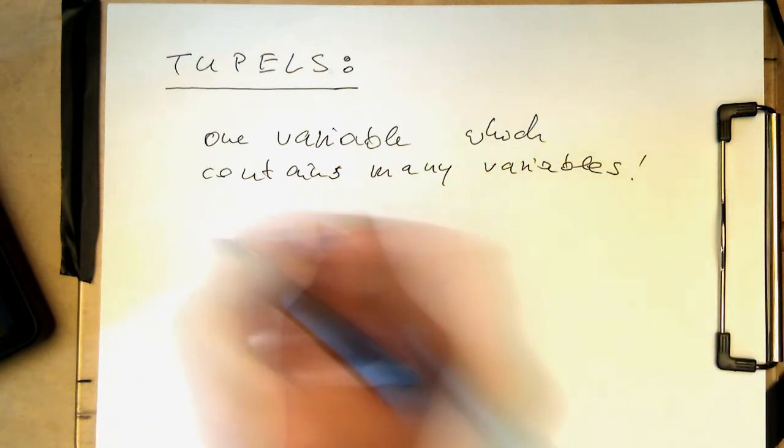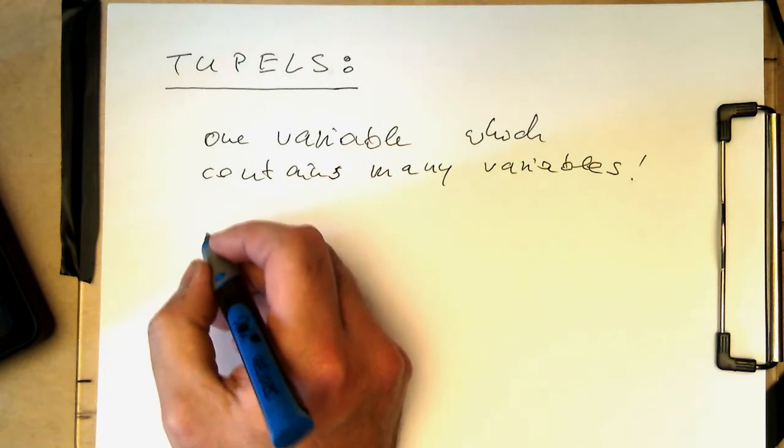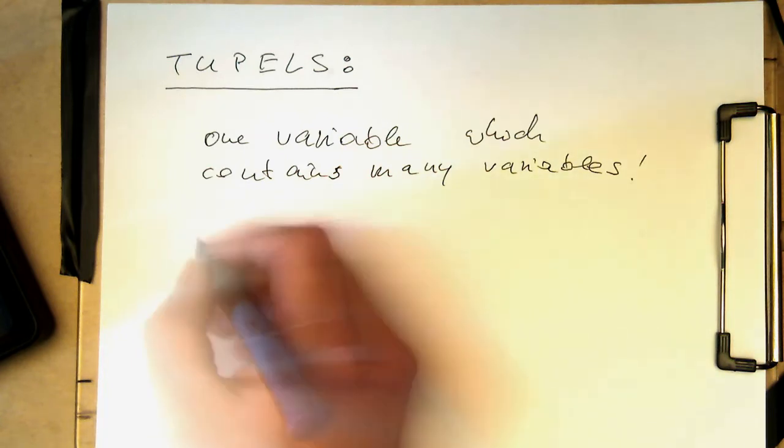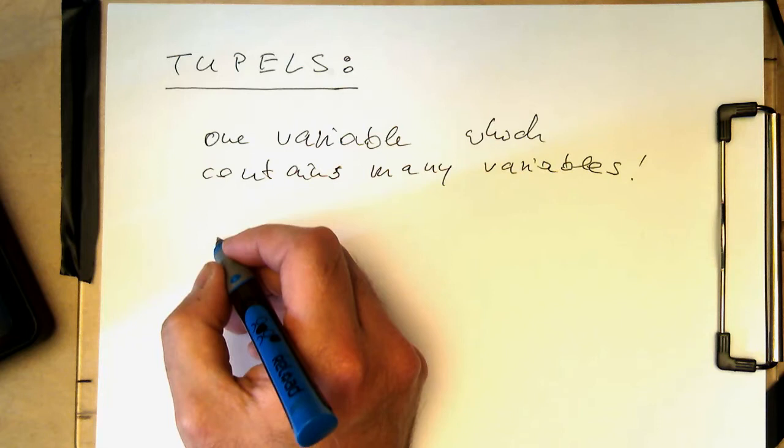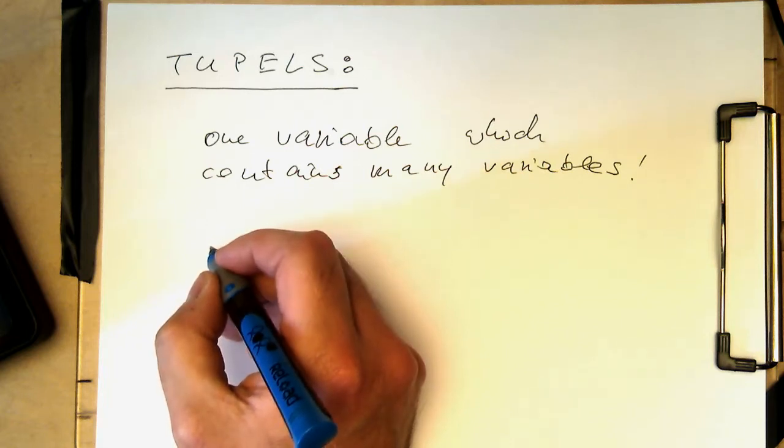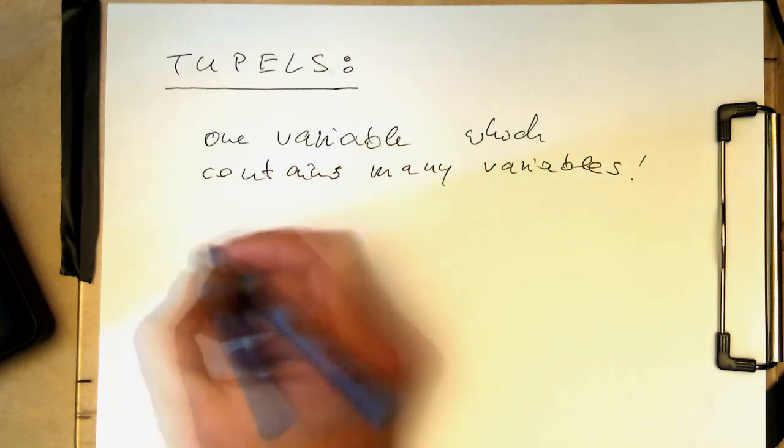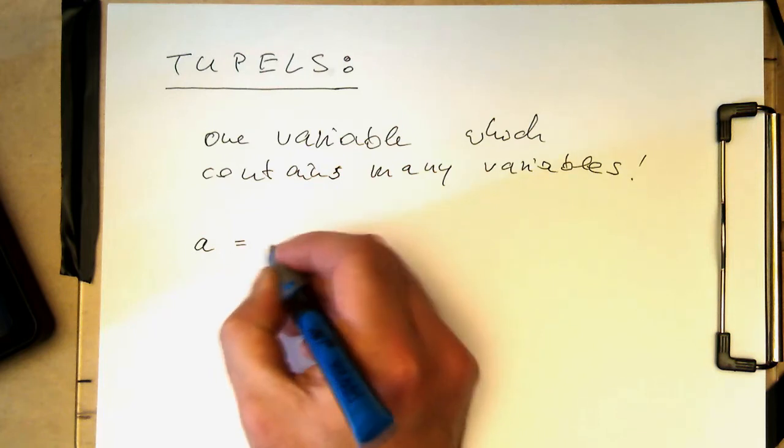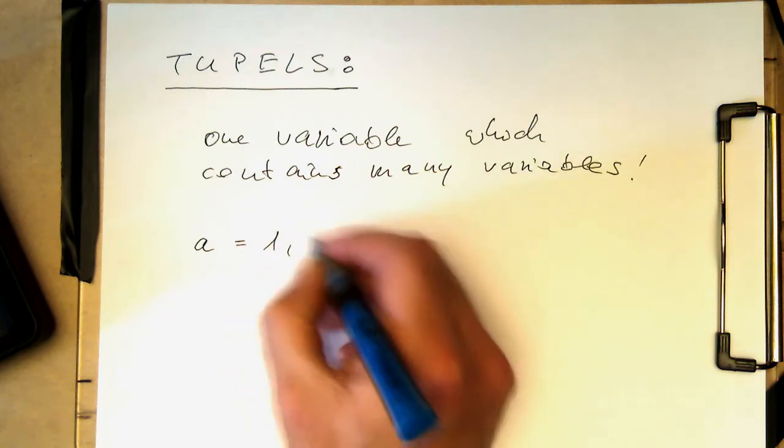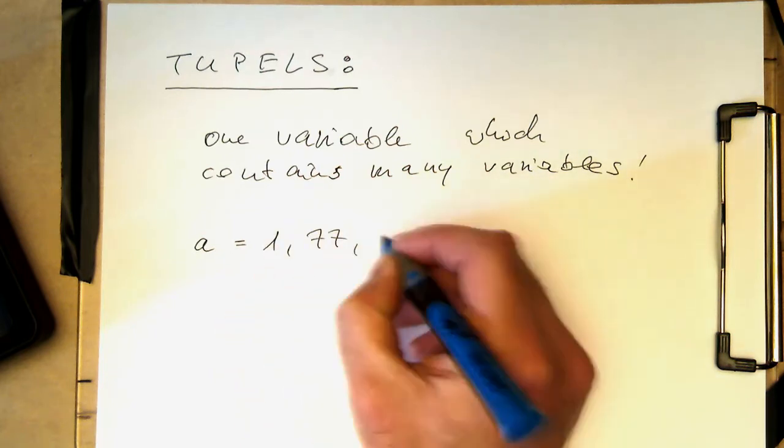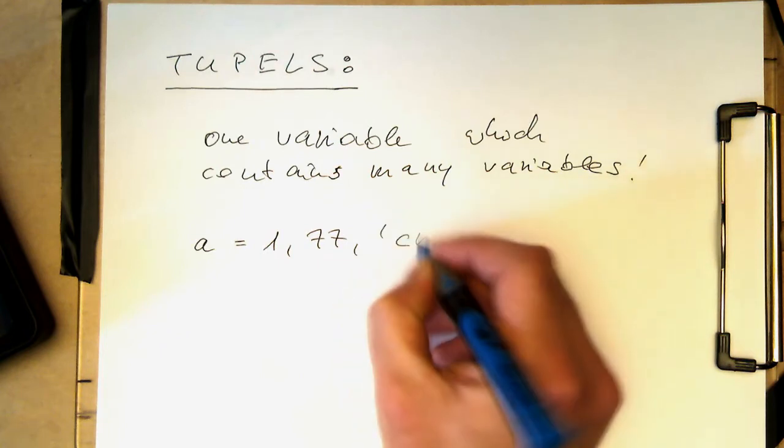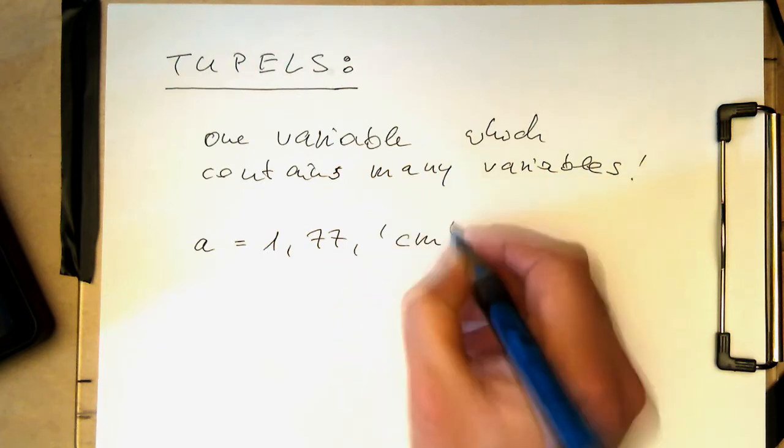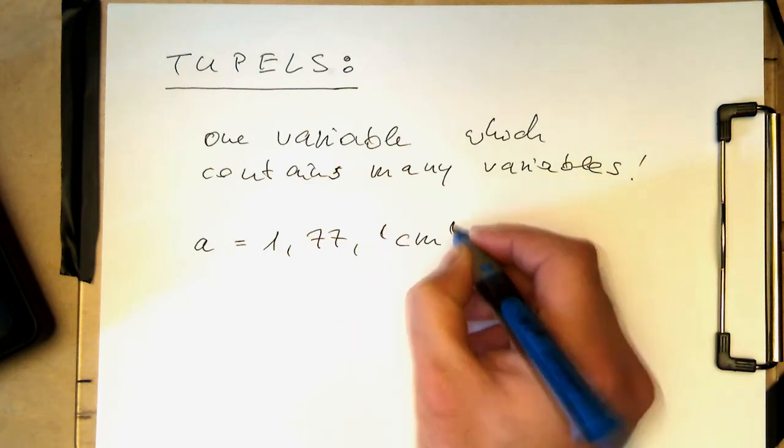So a tuple is quite similar to an array, but the idea is that we can package all different kinds of types into a tuple and then transport them to another place and unpack them. So we can, for example, write a equals 1, 77, centimeter. So something like that.